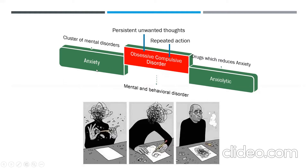Anxiety is a cluster of mental disorders characterized by uncontrolled feelings of fear. Obsessive compulsive disorder is a mental and behavioral disorder — obsession indicates persistent unwanted thoughts, mental images, or urges that generate feelings of anxiety, while compulsion is repeated action or routines that occur in response to obsession. The drugs used to reduce such behavior are called anxiolytic drugs.